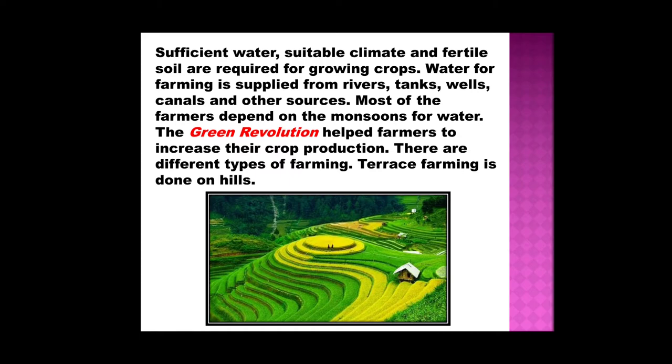Most of the farmers depend on the monsoons for water. The Green Revolution helped farmers to increase their crop production. The Green Revolution refers to when they used good quality high-yielding seeds and farming machines — that revolution or incident is known as the Green Revolution. There are different types of farming. Terrace farming is done on hills — they cut the side of the hills like stairs, and that farming is known as terrace farming, so that water doesn't get stagnant.